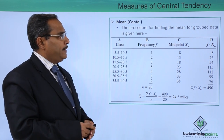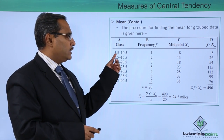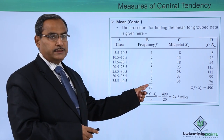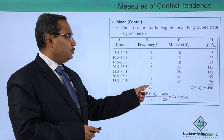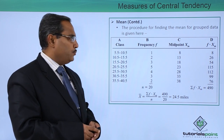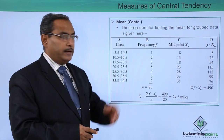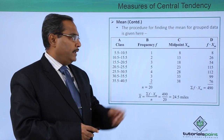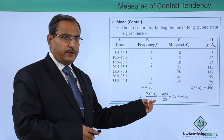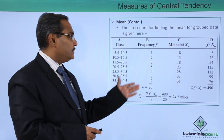Now let us discuss the procedure for finding the mean for grouped data. Here we have the respective classes with lower class boundaries and upper class boundaries, and the respective frequencies. We calculate the midpoint as (lower class boundary + upper class boundary) / 2. Columns B and C are multiplied to get column D, that is f × xₘ. The sum of that column is 490, and then 490 divided by the sum of the frequencies — the sum of the frequency is 20 — giving 24.5 miles as the respective mean for this data.